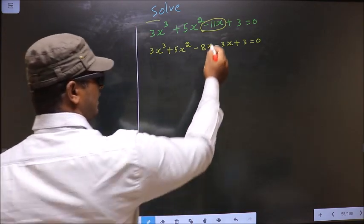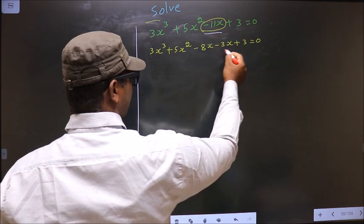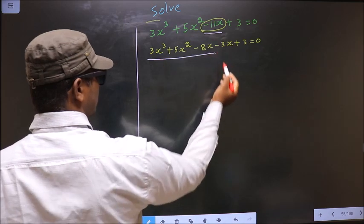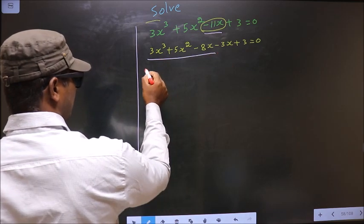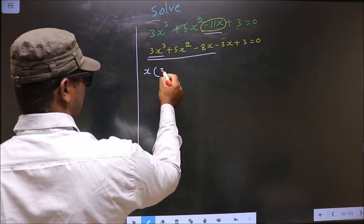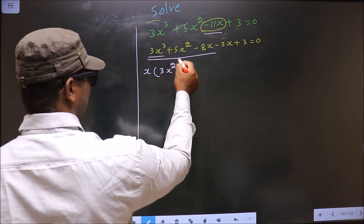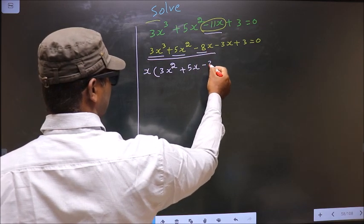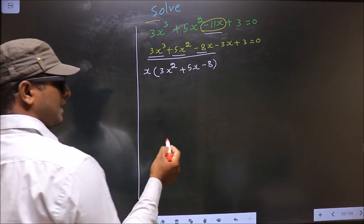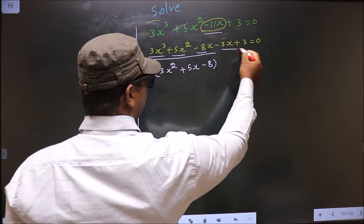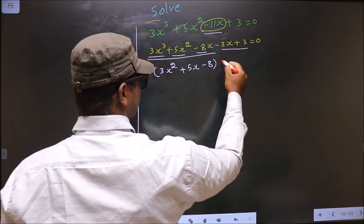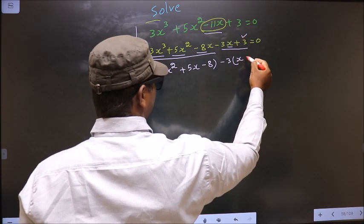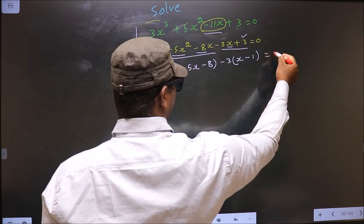In place of minus 11x I have written this. Next, from these three terms what can be taken out common is x. So here you get 3x square and here you get plus 5x, and here you get minus 8. In the same way, what can be taken out common from these two terms is minus 3. Here you get x and here you get minus 1, equal to 0.